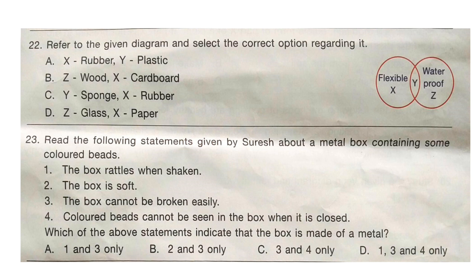Question 23: Read the following statements given by Suresh about a metal box containing some colored beads. The statements are: 1. The box rattles when shaken. 2. The box is soft. 3. The box cannot be broken easily. 4. Colored beads cannot be seen in the box when it is closed. Which of the above statements indicate that the box is made of metal? The correct answer is option D, that is 1, 3 and 4 only.